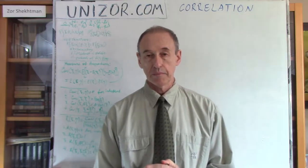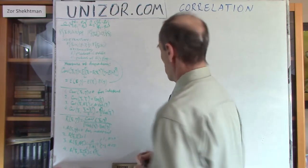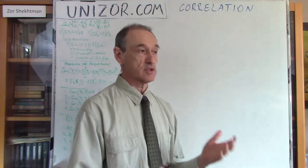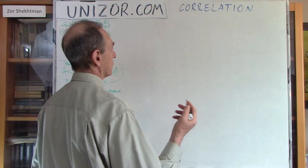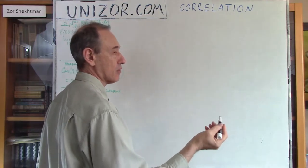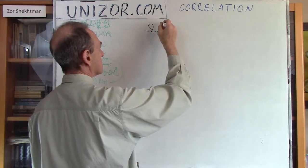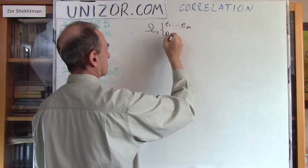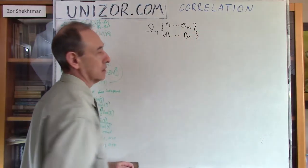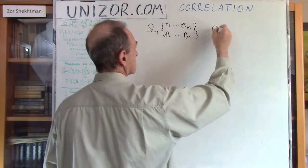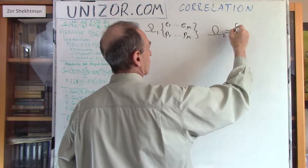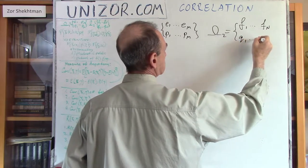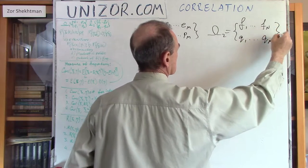Alright, so back to dependence and independence. We are talking about dependence or independence between random variables, so let's introduce a couple of random variables. To introduce any kind of random variable we have to provide the probability space, which contains certain elementary events and the probability measures associated with each elementary event. We also need a second probability space which has other elementary events and the corresponding probability measurements associated with each event.